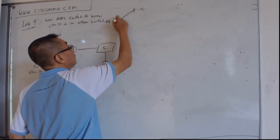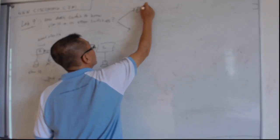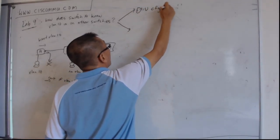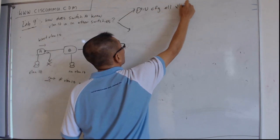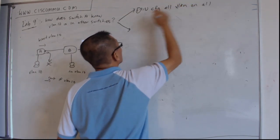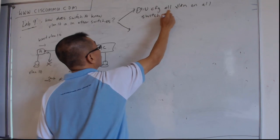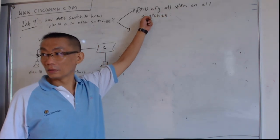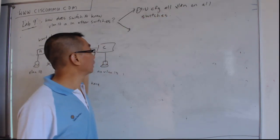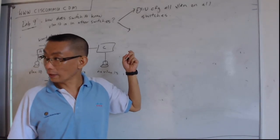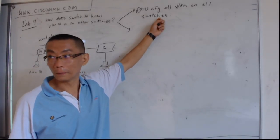There's two ways you can know it. The first way, you configure all VLAN on all switches. All the VLAN required, you configure it on all the switches. That's the first way you can do it. So which means it's a static assignment.